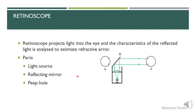Now getting into the retinoscope — it's one of the simplest instruments in eye care. It basically aims to produce a light that is sent into the patient's eye. Whatever light goes into the patient's eye gets reflected from the patient's retina and comes back to reach our eye, so we are able to see a reflective patch of the retina that we call the retinoscopic reflex. For that we basically need a light source, a reflecting mirror, and a peephole.